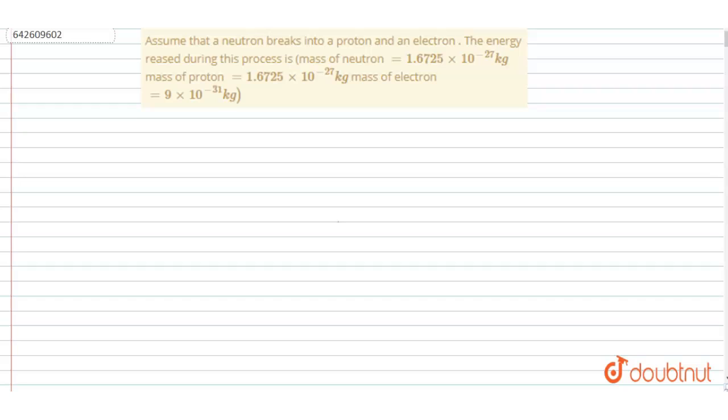The energy released during this process will be what? You can see the mass of neutron and the mass of proton are equal. So if the neutron breaks into proton and electron, then what will be the change in mass?